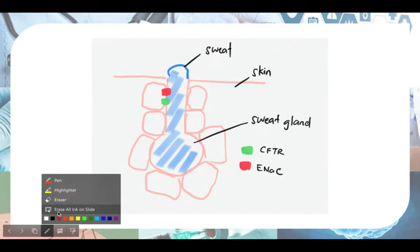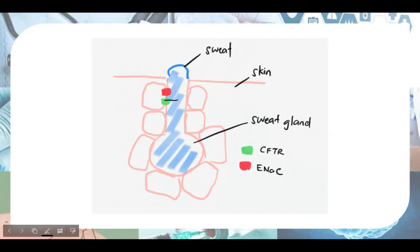So we'll be drawing that here. Hopefully it will work this time. This is your CFTR, so it absorbs chloride ions. This is your ENAC. The normal function is to absorb sodium ions.